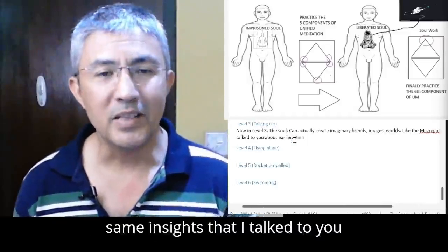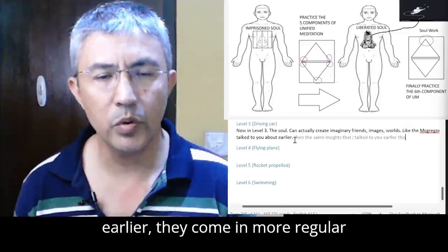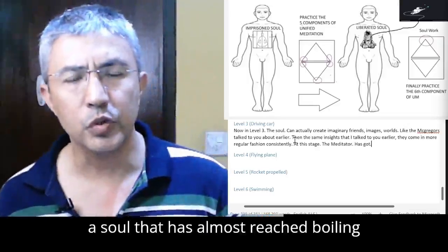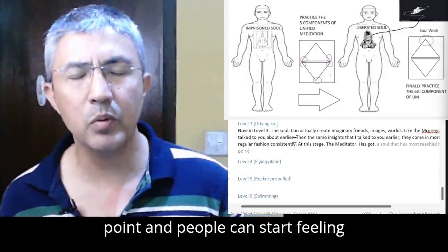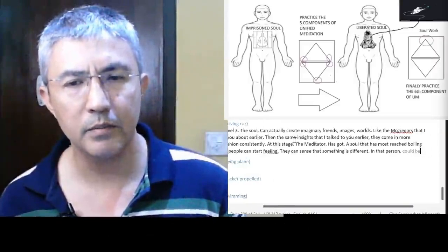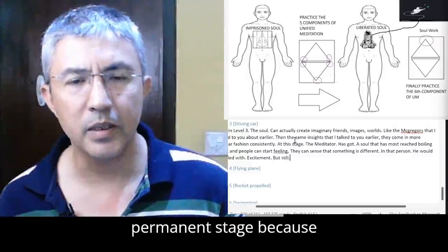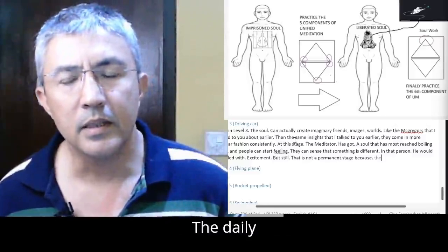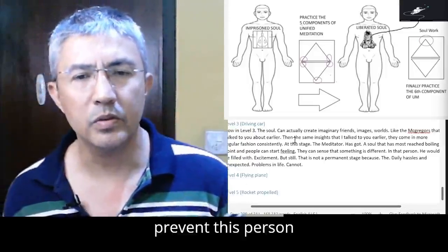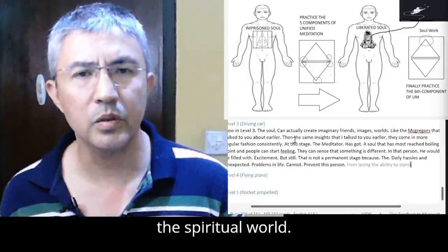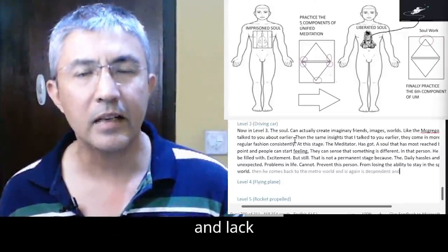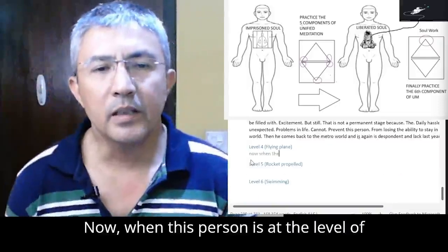Now in level three, the soul can actually create imaginary friends, imaginary worlds like the egregores that I talked to you about earlier. Then the same insights that I talked to you earlier, they come in more regular fashion consistently. At this stage the meditator has got a soul that has almost reached boiling point, and people can start feeling him. They can sense that something is different in that person. He would be filled with excitement, but still that is not a permanent stage because the daily hassles and unexpected problems in life cannot prevent this person from losing the ability to stay in the spiritual world. Then he comes back to the material world and is again despondent and lackluster.